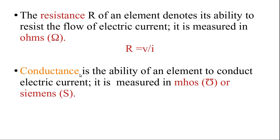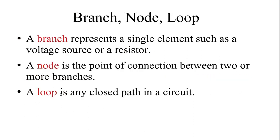Conductance is the ability of the element to conduct electric current, which is opposite to resistance. Resistance is the ability to resist the flow of current; conductance is the ability to conduct it. Conductance is measured in mho, which is the inverse of ohm, or you can call it siemens. So G equals one divided by R is called conductance.